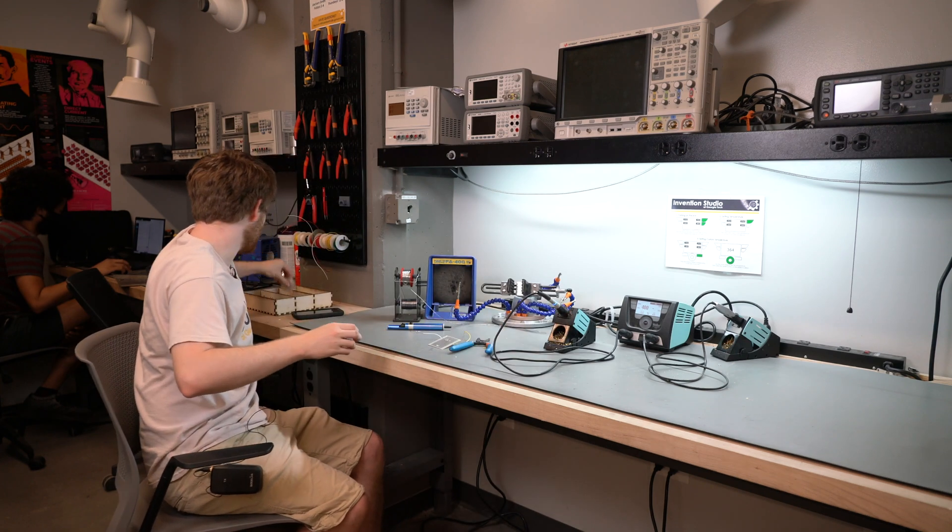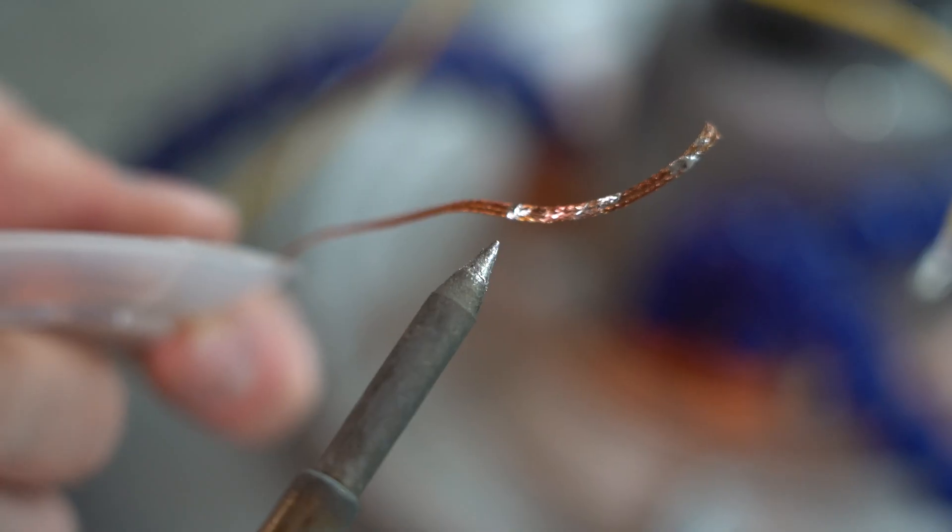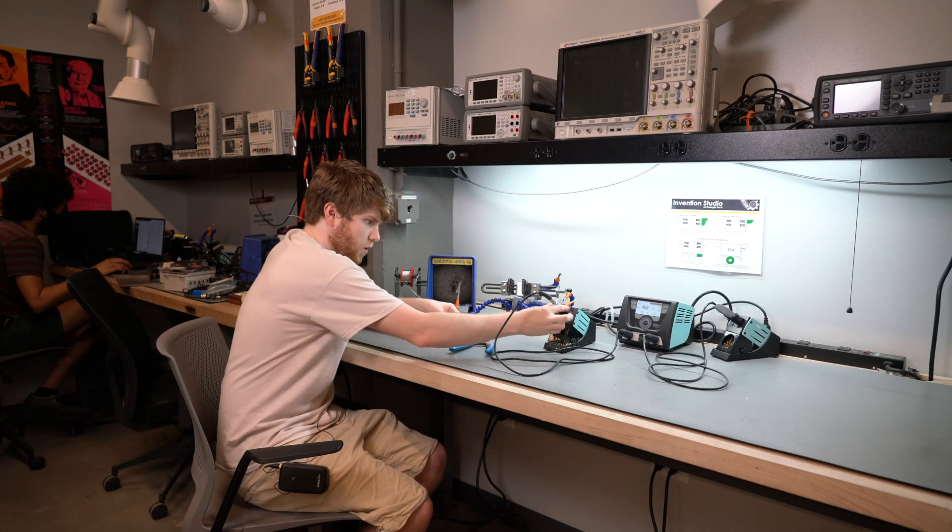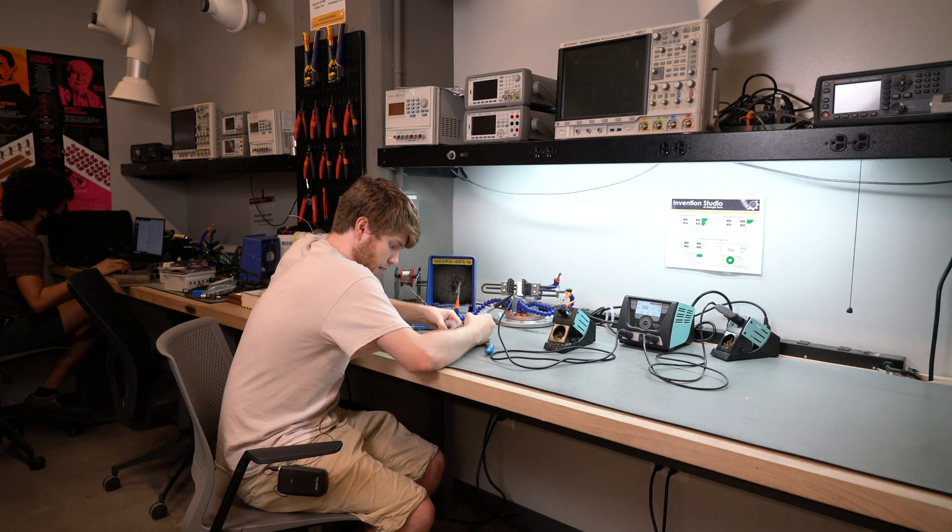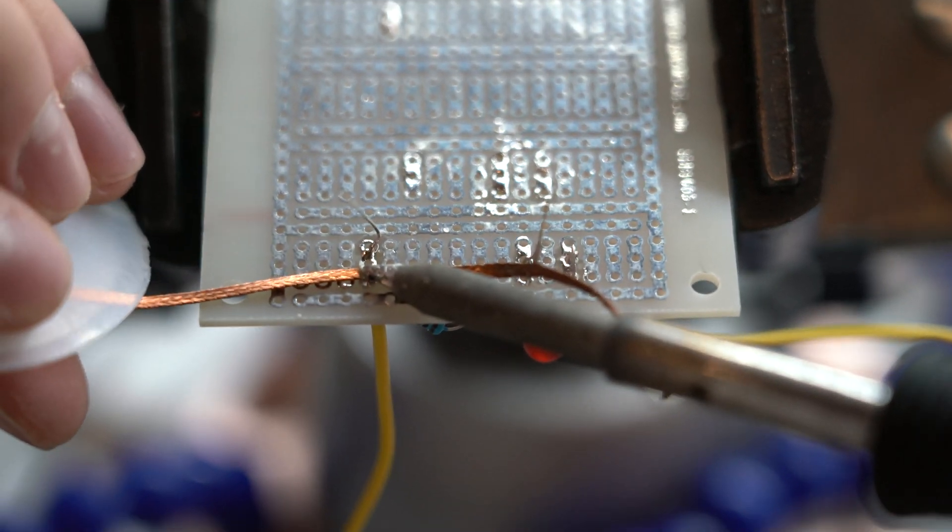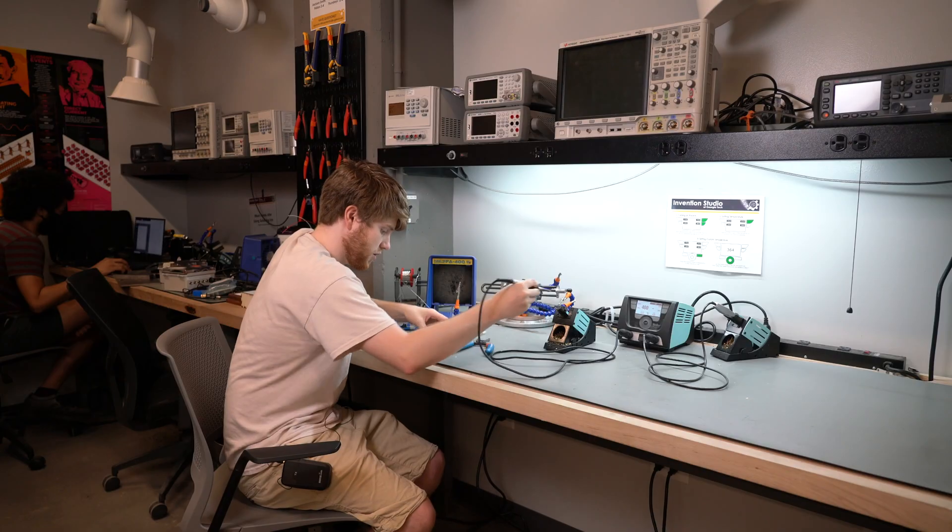The next method is the solder wick. The solder wick is this copper braid here. If you place it on an area where there's solder, place your iron on top of it to melt the solder, it will be absorbed into the wick. And when you remove the wick, it will take away the solder for you.